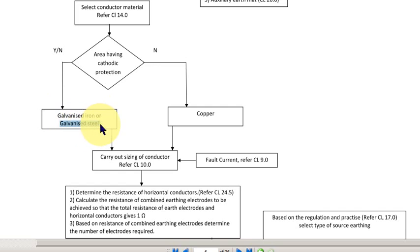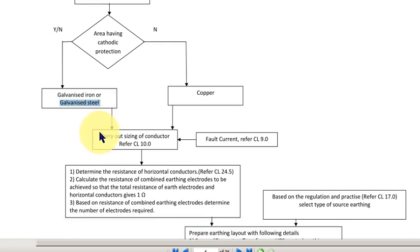Next is, you have to carry out the sizing of the conductor. Once you have decided the conductor type, then you have to do the sizing of the conductor. To size the earthing conductor, the input you need is the fault current.